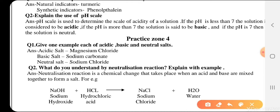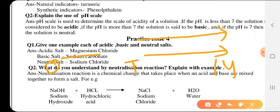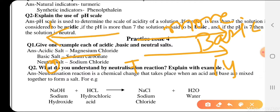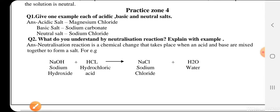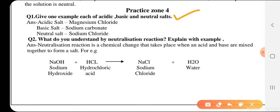The pH scale is used to determine the acidity or basicity of a solution. If the pH is less than 7, the solution is considered to be acidic. If the pH is more than 7, the solution is said to be basic. And if the pH is 7, then the solution is neutral.